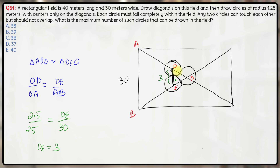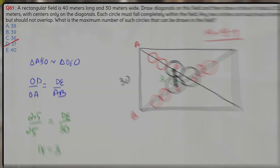Since these two critical circles are not overlapping, obviously all other circles will also not overlap each other. Hence the total number of circles is 19 + 19 − 1 = 37. The final answer is option D, 37.